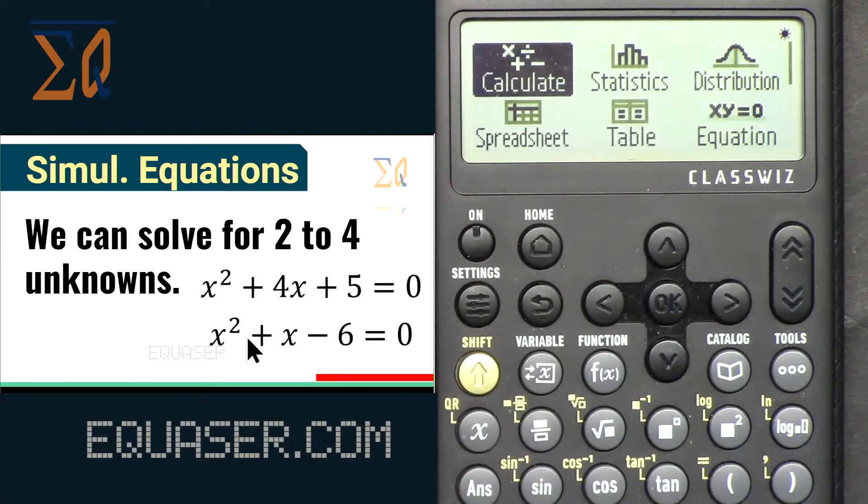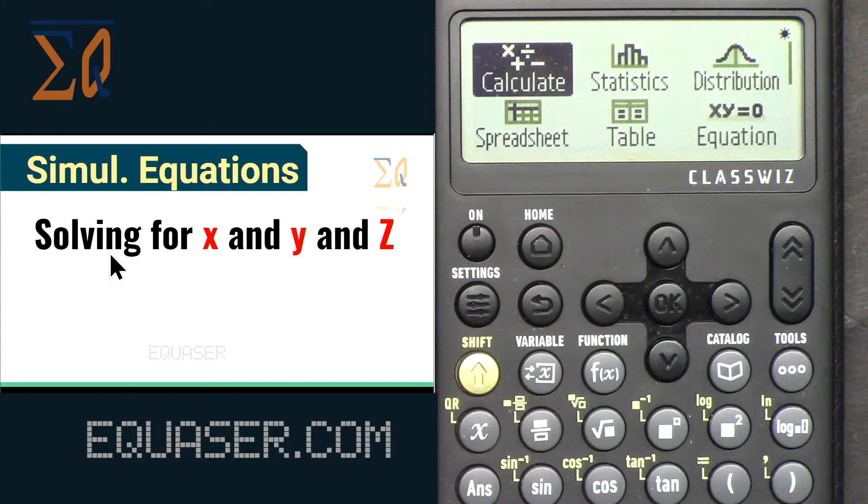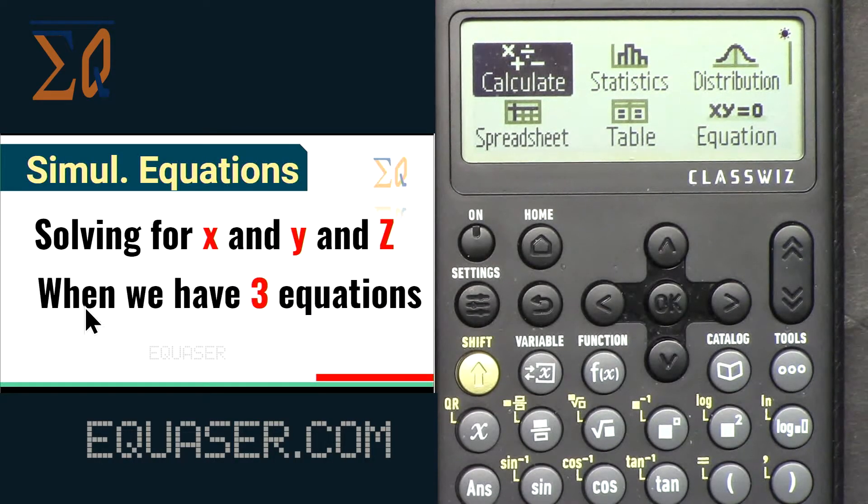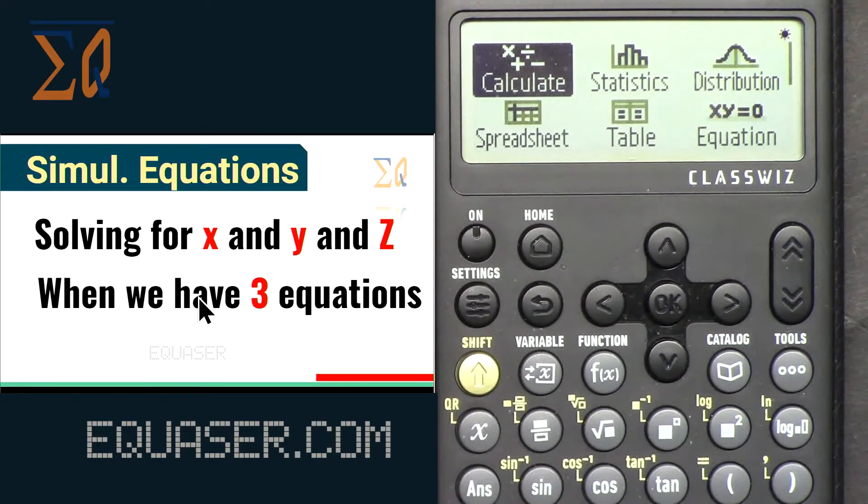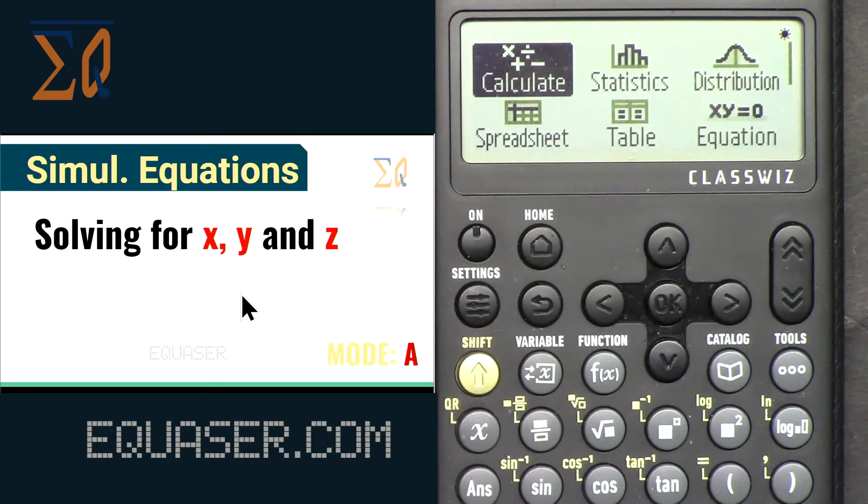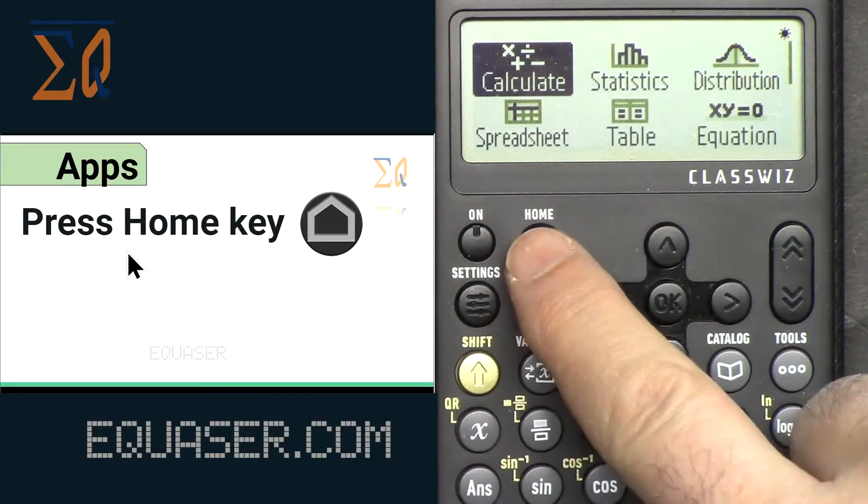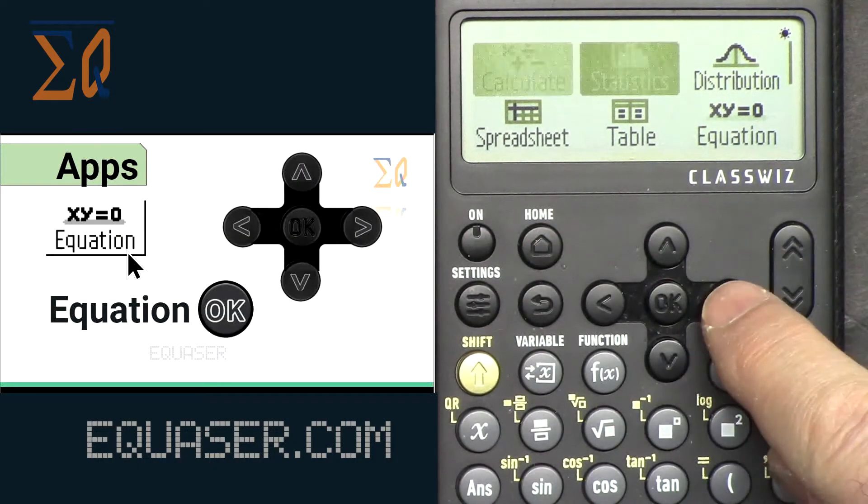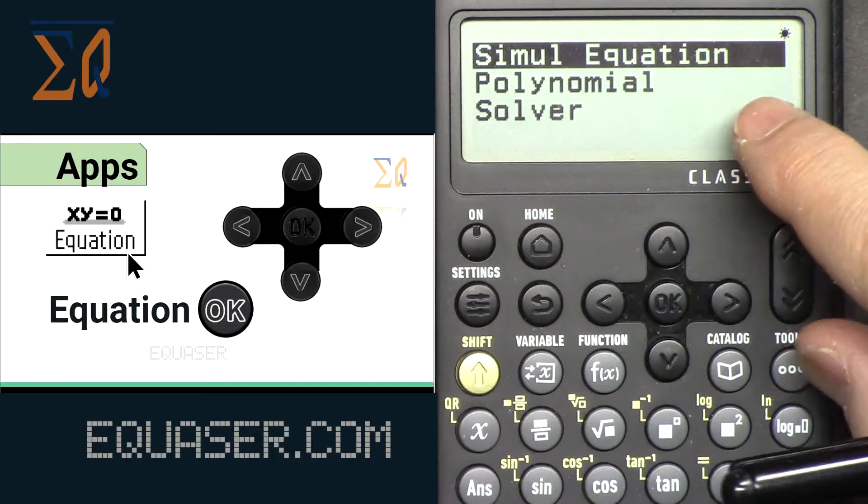We can solve two to four unknown equations. For example, we can solve for x, y, and z in equations. You have to have three equations to solve for three unknowns, two equations for two unknowns. Press Home, then go to the right again to Equation.